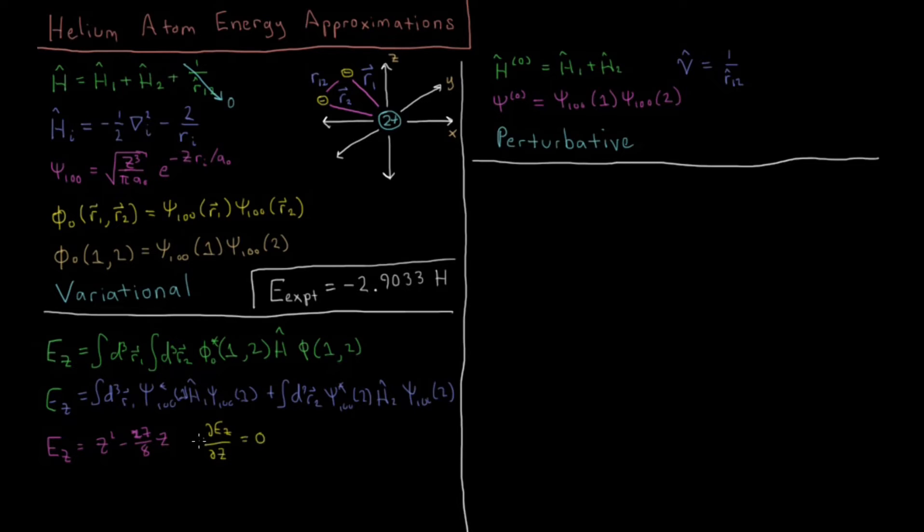And then we know in variational methods what we want to do is differentiate the energy with respect to our variational parameter and set that equal to zero. So if we differentiate this with respect to z, set it equal to zero, and solve for z, you'll get a z, a minimum energy z of 1.6875, which is less than 2. So the effective charge of this nucleus is less than 2 with our 2 electrons here, which are both in this 1s orbital. If we want to view this as an effective charge, because we have minimized the energy, gotten our best energy wave function within this type of approximation.